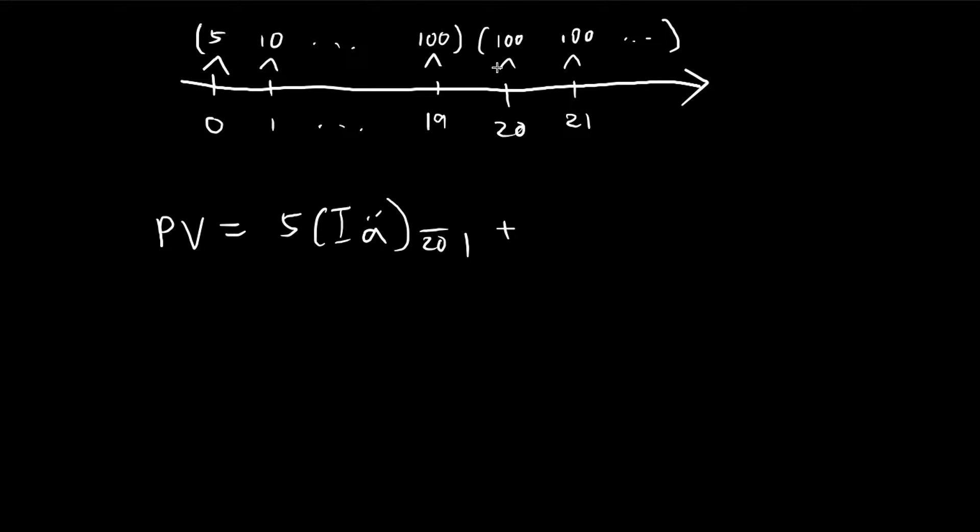So the present value at time 20 of all the subsequent payments is just 100 divided by d. This is the formula for perpetuity. So this is the present value of all these payments at time 20. So bringing it back to time 0, we just do v to the power of 20.